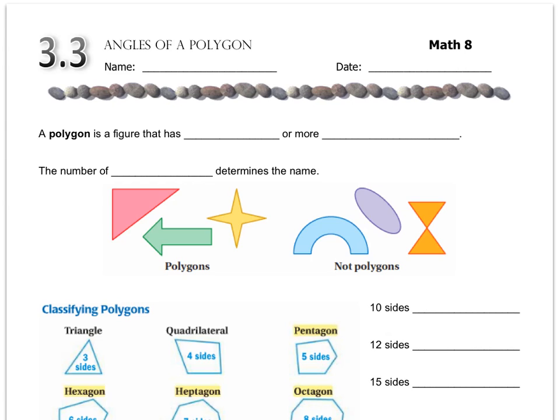I know you loved those two formulas that I gave you in the last lesson about triangles, so I am not going to disappoint you, and I'm going to give you another formula, this time about polygons. First we have to talk about what a polygon is.